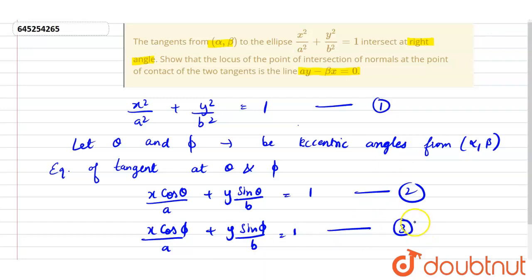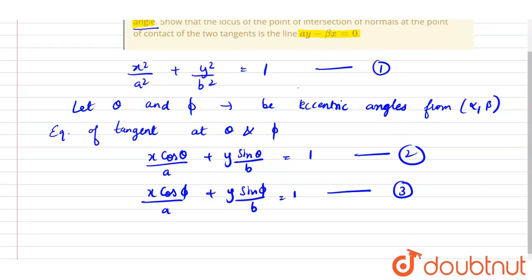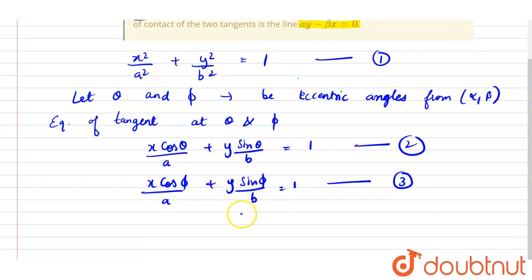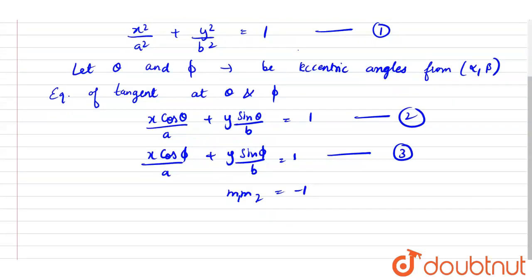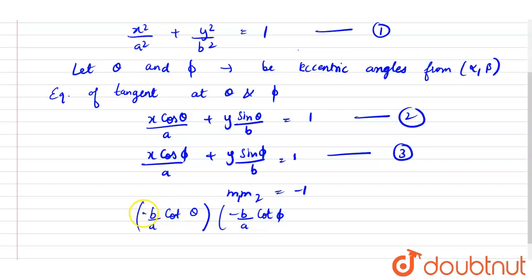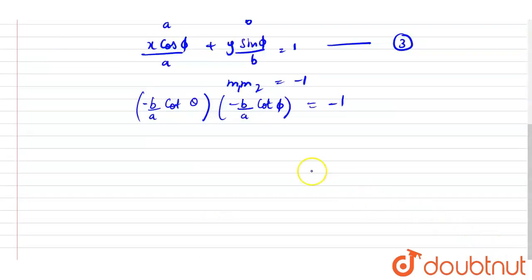Since the two tangent lines are at right angles, the product of their slopes must equal −1. The slope of the tangent at θ is −(b cosθ)/(a sinθ) and at φ is −(b cosφ)/(a sinφ). Setting their product equal to −1 and simplifying, we get: tan θ · tan φ = −b²/a². Call this equation 4.